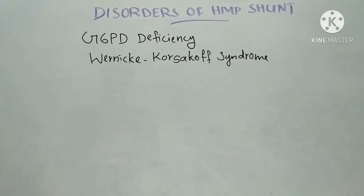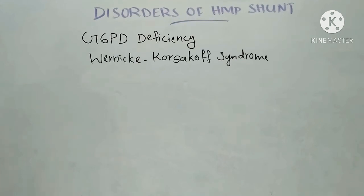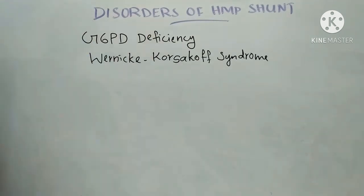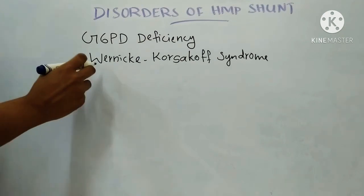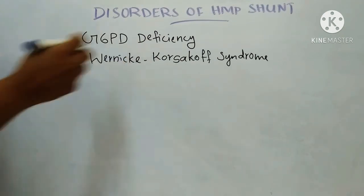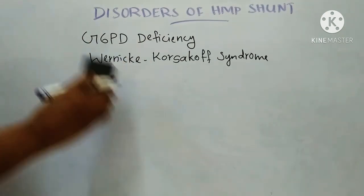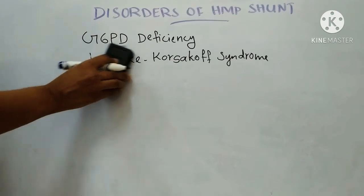Hello everyone. Today we will discuss the disorders associated with the HMP pathway. We will learn about G6PD deficiency and Wernicke-Korsakoff syndrome. First, we will discuss G6PD deficiency.